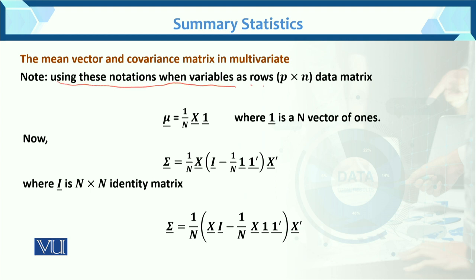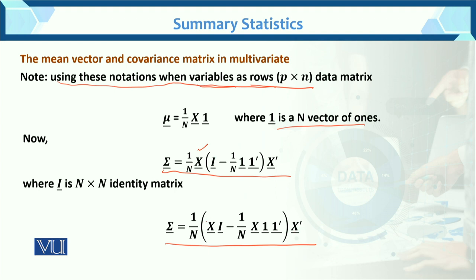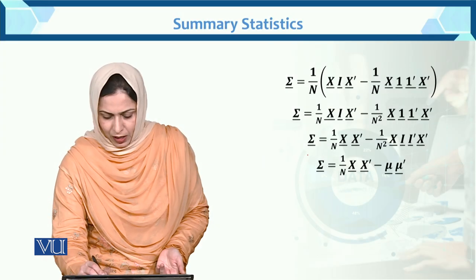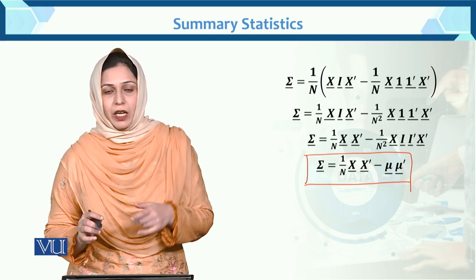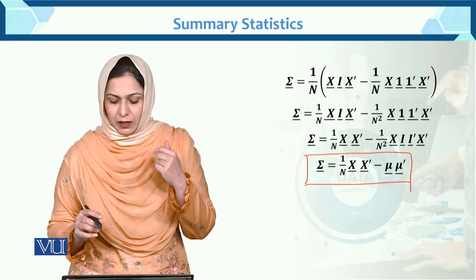Using the notation when variables are as rows in the data matrix — this is based on the second example. The mean vector mu equals 1 over n times x times 1, where previously we had x-prime but here we use x times 1. Similarly, the variance-covariance matrix changes accordingly — x is multiplied inside, and after solving, x-prime multiplies in. Use this result when variables are as rows; the previous result is for variables as columns.